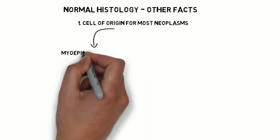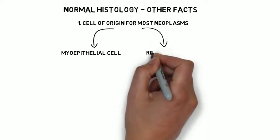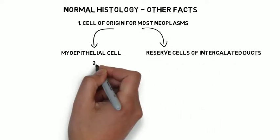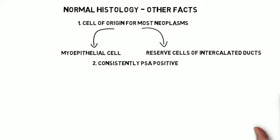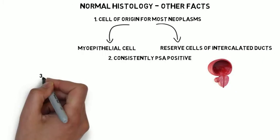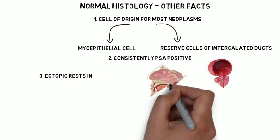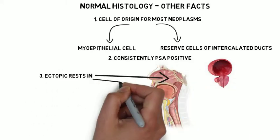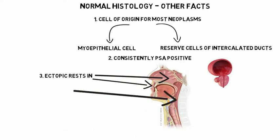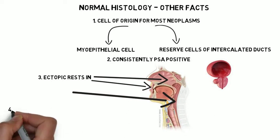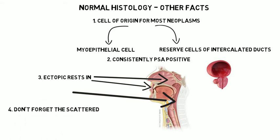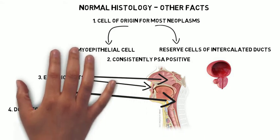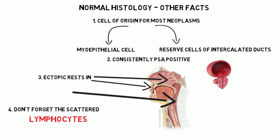Other facts about normal histology: the cell of origin for most salivary gland neoplasms is the myoepithelial cell; some also come from the reserve cells of the intercalated ducts. Neoplasms of the salivary gland are consistently PSA positive for unknown reasons. Ectopic rests exist in the oropharynx, lips, and nasopharynx — really throughout the head and neck. Don't forget the scattered lymphocytes, which can give rise to lymphomas in these locations.